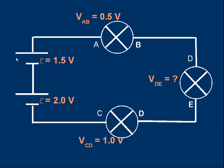Here's one for you to try. Given some data on EMFs and voltages, can you work out the voltage across the right-hand bulb? Pause the video and think about it. The answer is two volts. The two EMFs — 1.5 volts and 2 volts — can be added together: 1.5 joules per coulomb plus 2 joules per coulomb gives a total of 3.5 joules per coulomb, so the total voltage supplied by the cells is 3.5 volts. That equals the voltages from all three bulbs added together: 0.5 plus 1 plus the unknown, so the third bulb must have two volts across it, making the total 3.5 volts — the same as the total EMF.